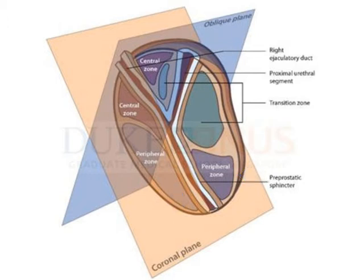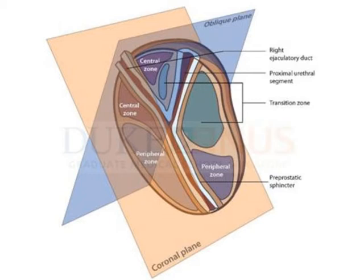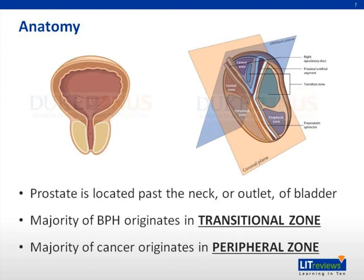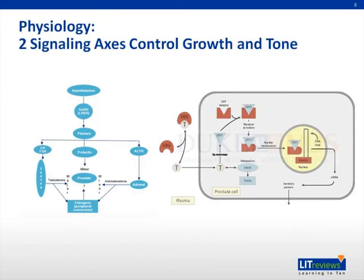You can imagine that BPH of the transitional zone can essentially block off urine flow through the urethra, whereas prostate cancers, which originate in the peripheral zone, can be palpated through a digital rectal examination.